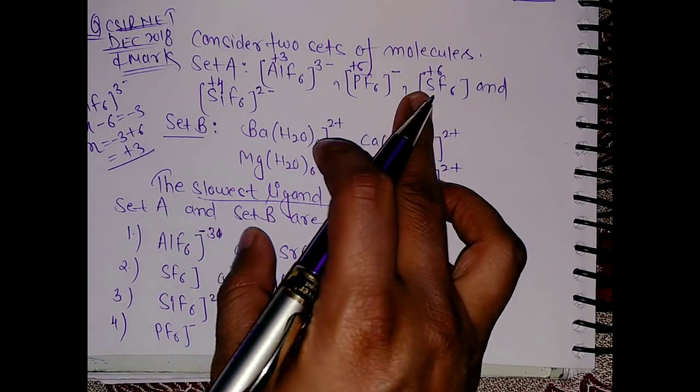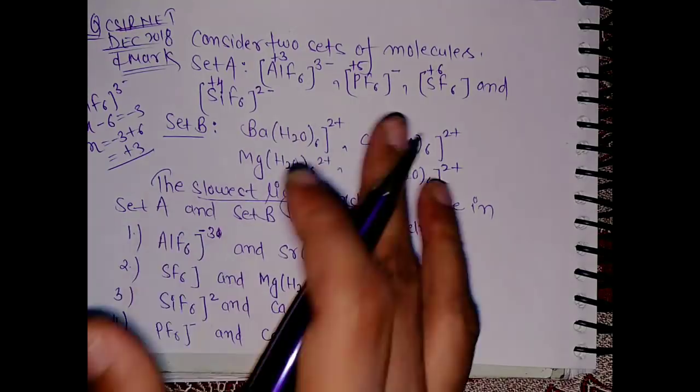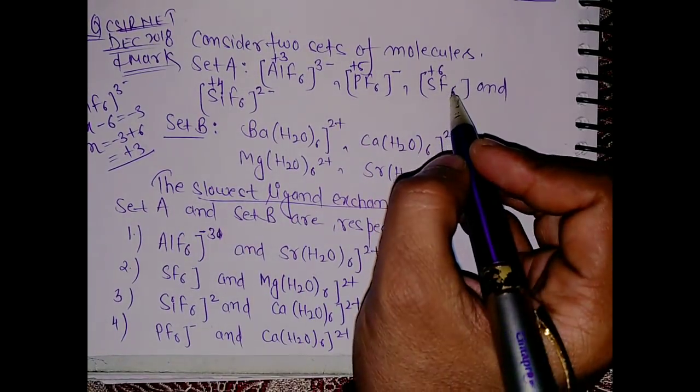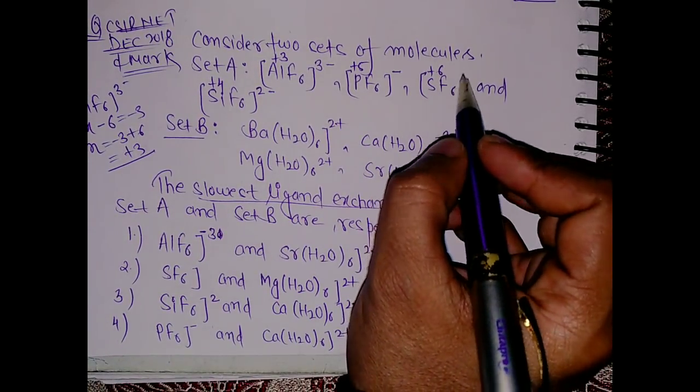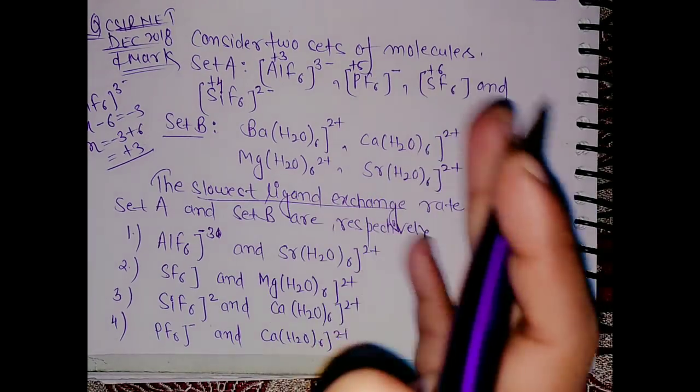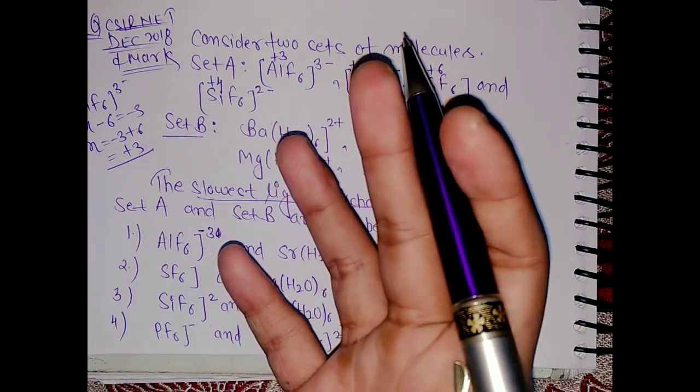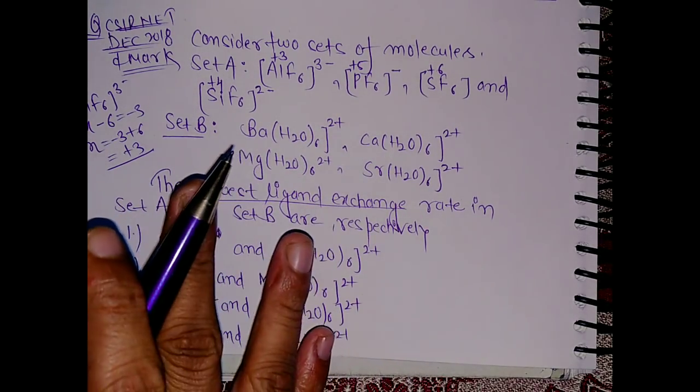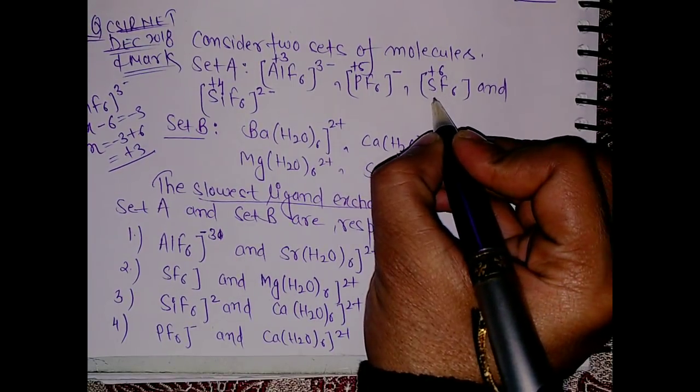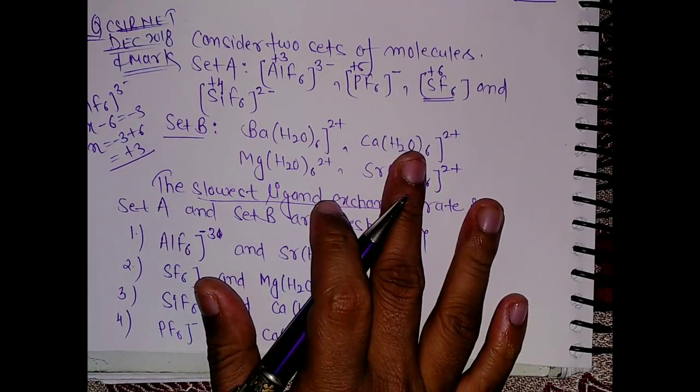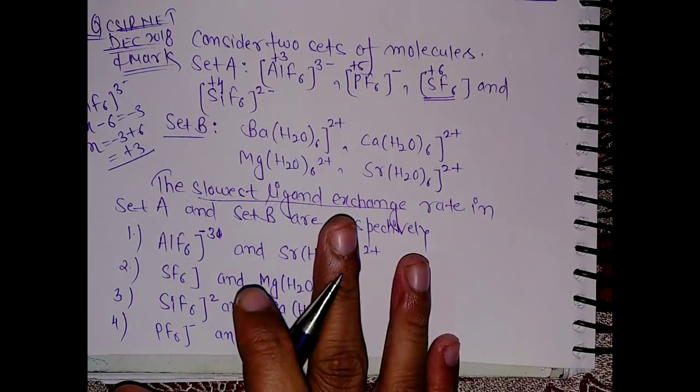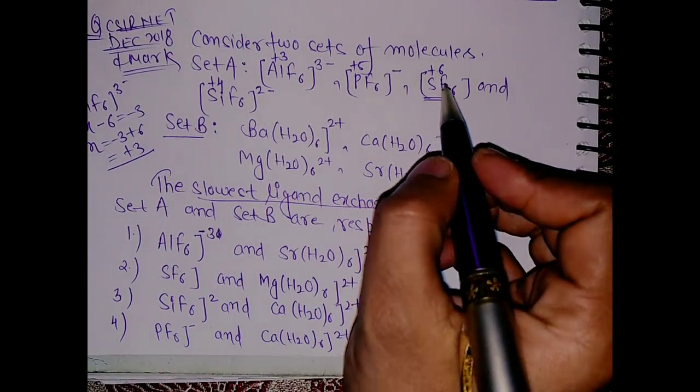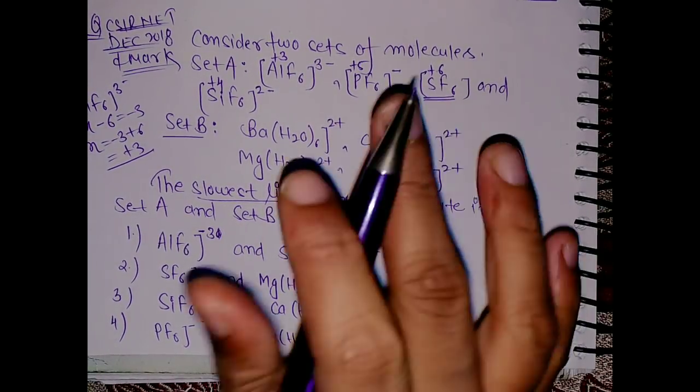Now the concept is higher the oxidation state, higher will be the Z effective, so higher is the force of attraction between this central atom and the ligands. So it will be very difficult for the ligands to dissociate and participate in the ligand exchange mechanism. Very basic concept, no rocket science. So higher is the oxidation state, higher is the Z effective and lesser labile the complex.